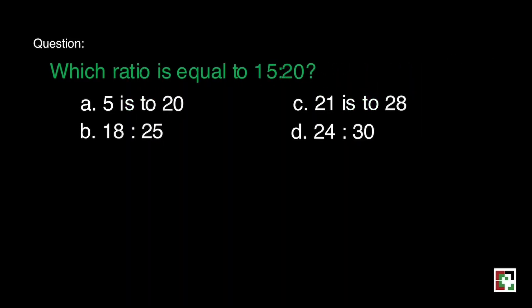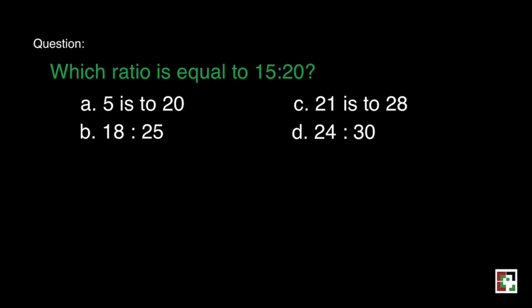Next. Which ratio is equal to 15 is to 20? Is it A, 5 is to 20? B, 18 is to 25? C, 21 is to 28? And D, 24 is to 30? Let's try these choices one by one.